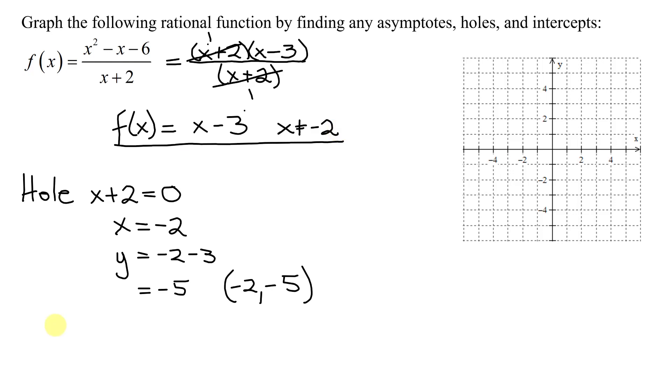Now all I have to do is graph the function f of x equals x minus 3 with a hole at x equals negative 2. So this is going to give me the graph of a straight line. Let's compare it to y equals mx plus b. The y-intercept is at 0, b, and in this case b is negative 3. And the slope m is the coefficient of the x term, so it's a 1. I need a fraction, so divide it by 1.